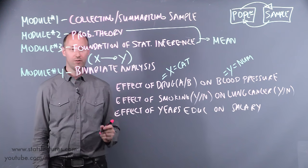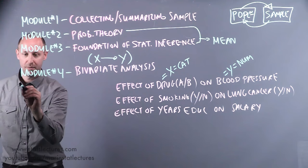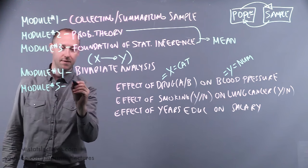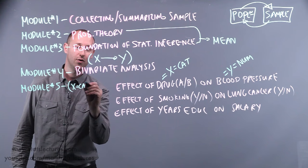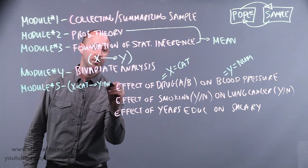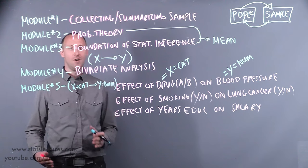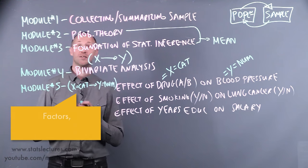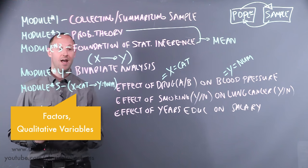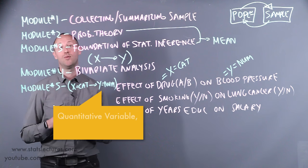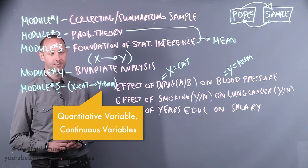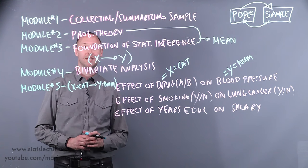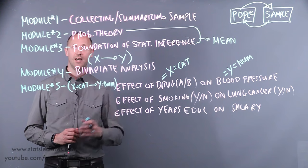Analyzing the effect of a categorical X variable on a numeric Y variable is going to be covered in module five. It's also worth mentioning that categorical variables are sometimes called factors or qualitative variables, and numeric variables are sometimes called quantitative or continuous variables — we'll refer to them as categorical or numeric. In module five, we'll cover things like the two-sample t-test, analysis of variance, and other related concepts.